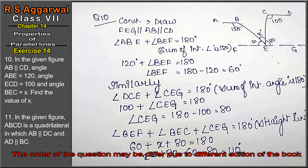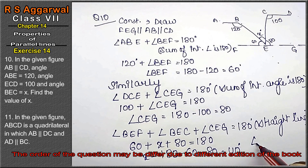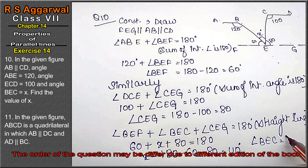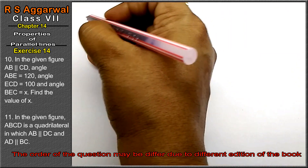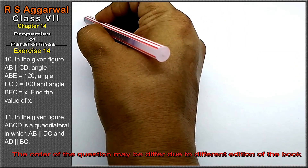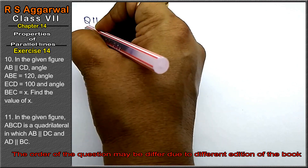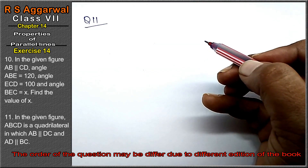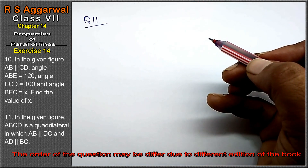Hence, angle BEC equals to 40 degrees. That is the answer. Let's do question number 11 of exercise 14, that is properties of parallelogram.